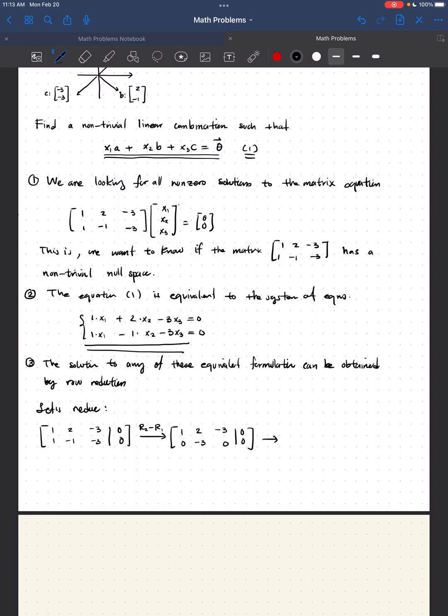Now, I multiply by negative 1 third, the second row, and obtain [1, 0; 2, 1; -3, 0], augmented by [0, 0].